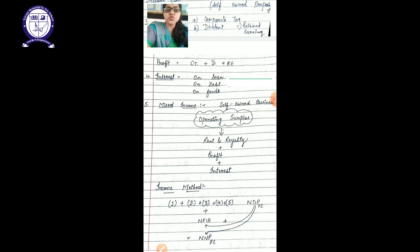Royalty means any rights which we are giving to some other person, and in return of that right he is providing us with some kind of money. That is your royalty. For example, I am a writer. Then I am writing a book and I have written that book and I have given to the publisher.